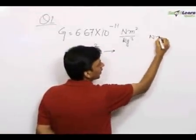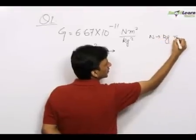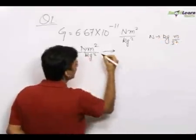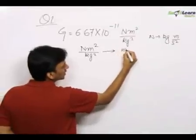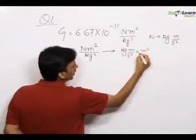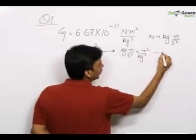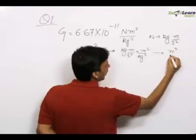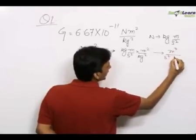Newton stands for kg meters per second squared. So we feed in here, this is equivalent to kg meters per second squared times meter squared upon kg squared. This is equivalent to meter cubed upon second squared kg.